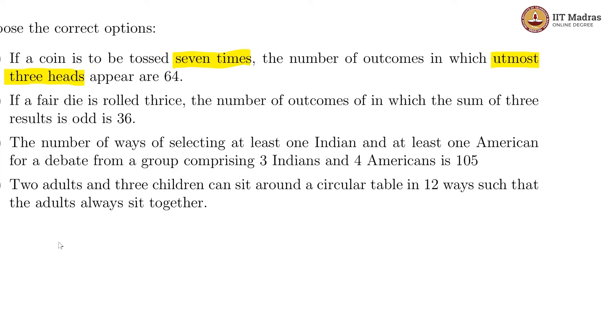So, that gives us four cases, which is zero heads, one head, two heads and three heads. So, zero cases of the seven, we choose no toss at all. So, that will become 7C0, which is equal to one.